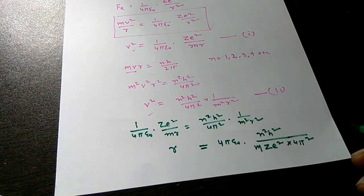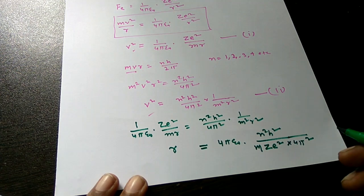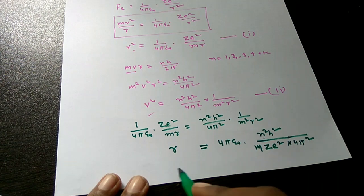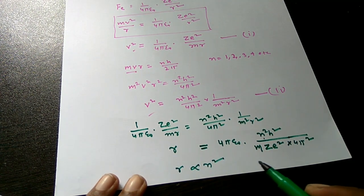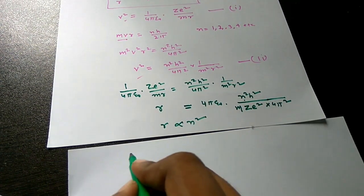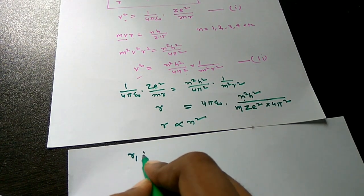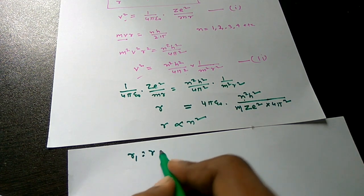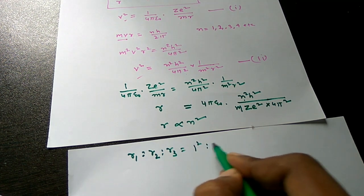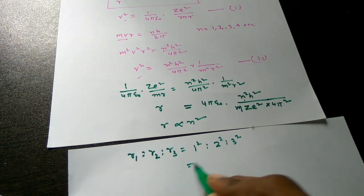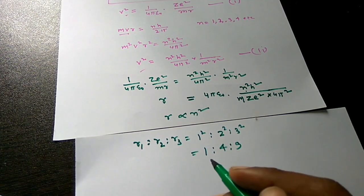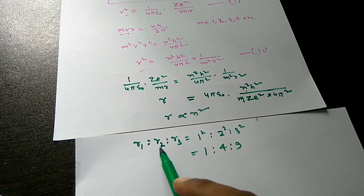From this expression, R is proportional to n². Therefore, R₁ : R₂ : R₃ = 1² : 2² : 3² = 1 : 4 : 9. Radii between these orbits are not permissible.